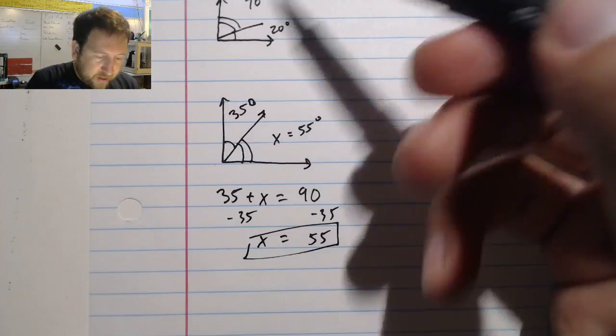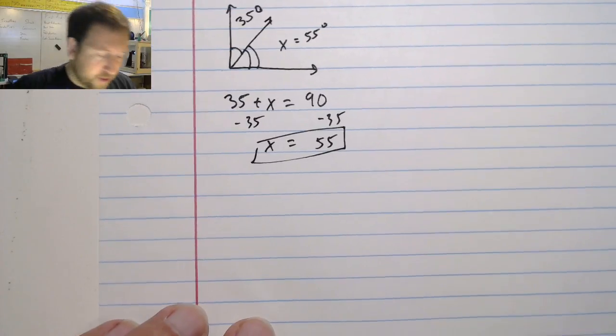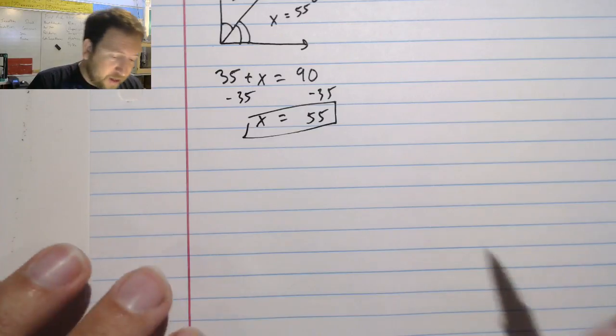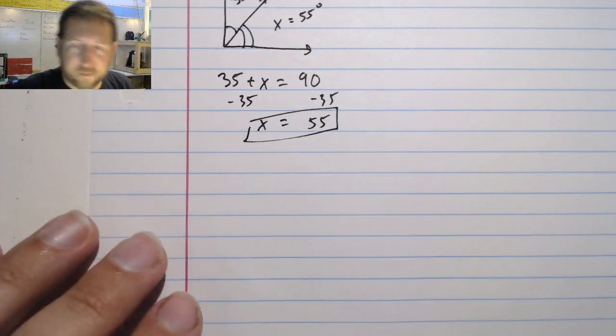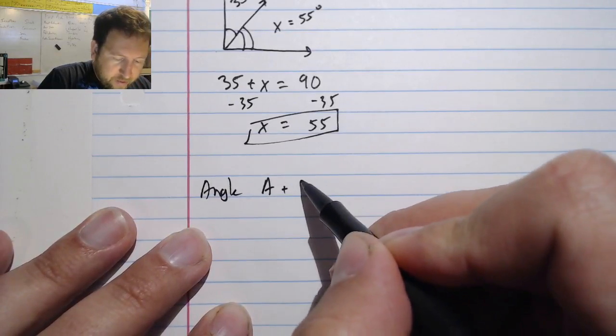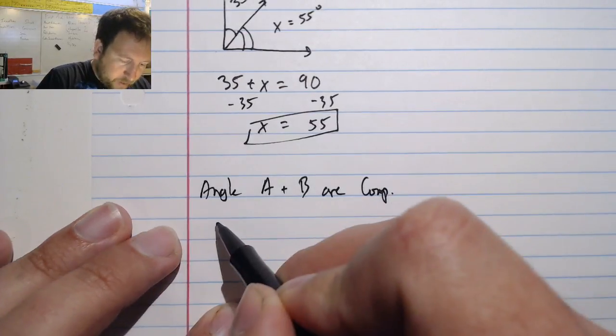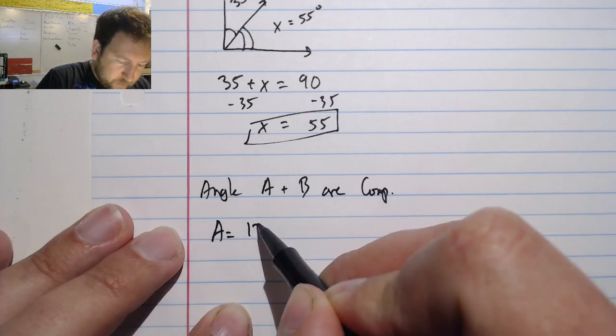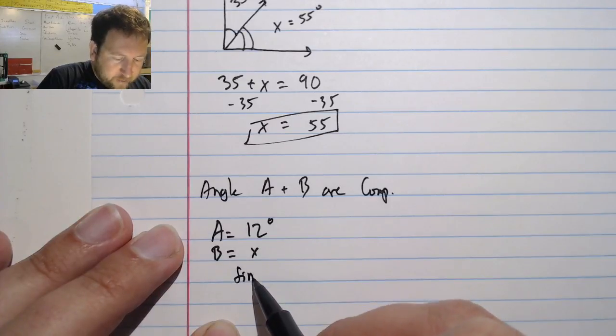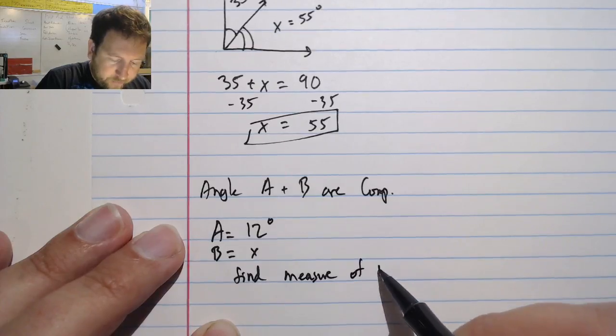Let's do one more example looking at our complementary angles. Say, for example, that I have an angle that instead, maybe they don't even give me what the picture looks like. They say that angle A and B are complementary. A equals 12 degrees, B equals x. Find the measure of B.